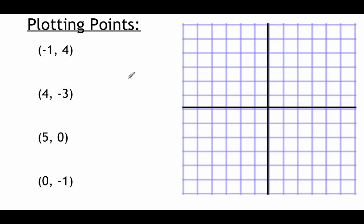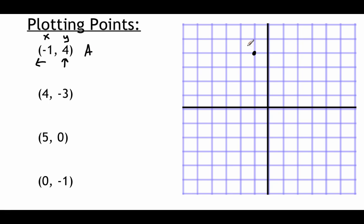So let's go ahead and plot some points. On the left-hand side of the screen I've got four different ordered pairs. Starting with negative one, four — the x-value is negative one, so we move left one space. The y-value is positive four, so we move up four spaces. So for this first ordered pair we go left one and up four spaces. Let's call this point A.